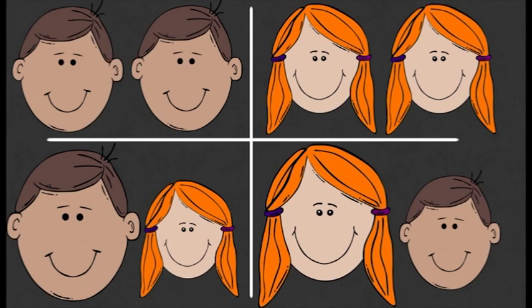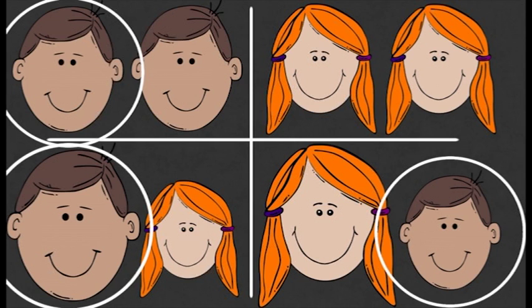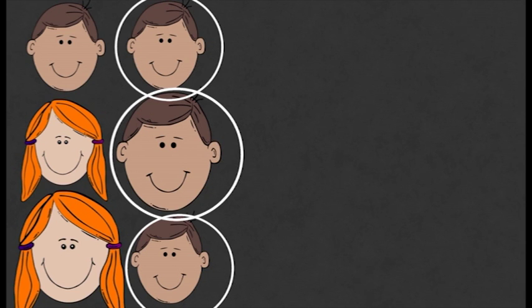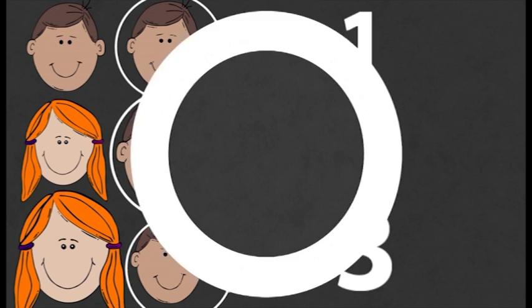Seeing as we already know that the first child's gender is a boy, we can rule out the two sisters option, which leaves three remaining combinations, meaning the chances of the second child being a boy must be a third.